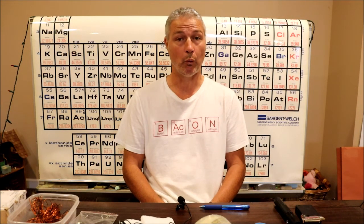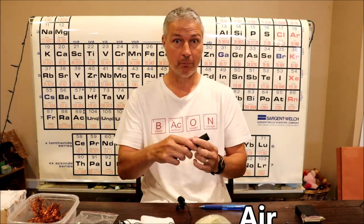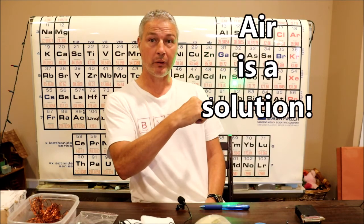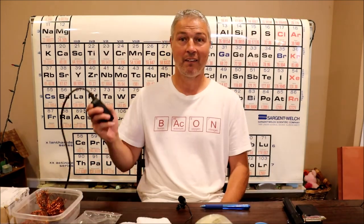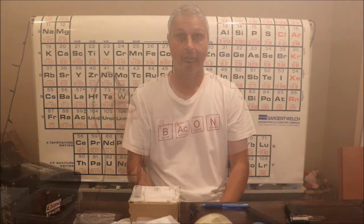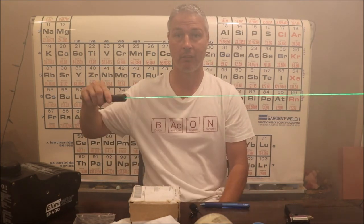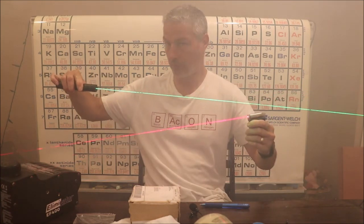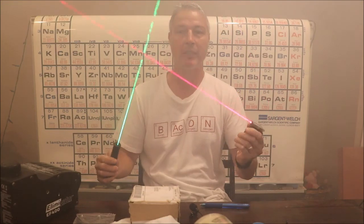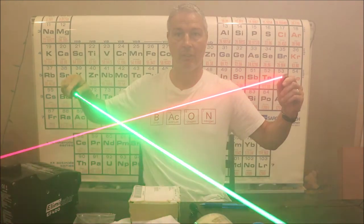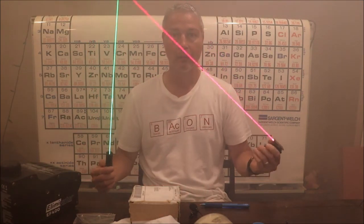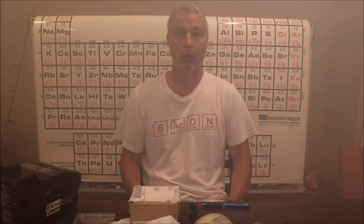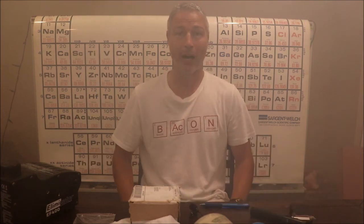Hey everybody, I'm talking to you while I'm in the middle of a solution. You can tell my laser pointer goes right through it — you can't see the path — and that's because solutions are transparent to light. That was my fog machine. I have a fog machine in my basement. Now check it out: you can see the path of the light, and that's because colloids scatter light. Suspensions block light. So if you want to know if something is a solution, a suspension, or a colloid, just shine some light on it. Let's go talk more about solutions, colloids, and suspensions.